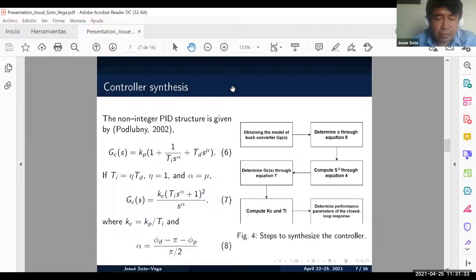The non-integral PID structure is given by equation six. A non-integral PID control is obtained considering the following: the integral time is equal to eta multiplied by the derivative time where eta is equal to one and the fractional order is equal to mu.